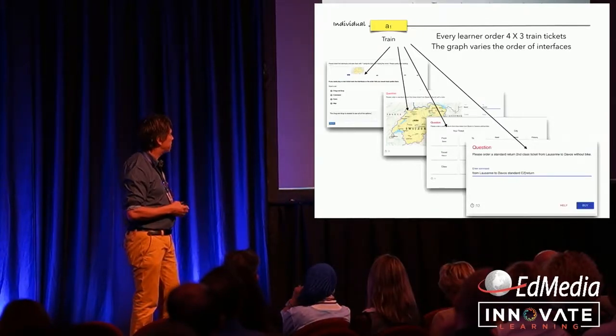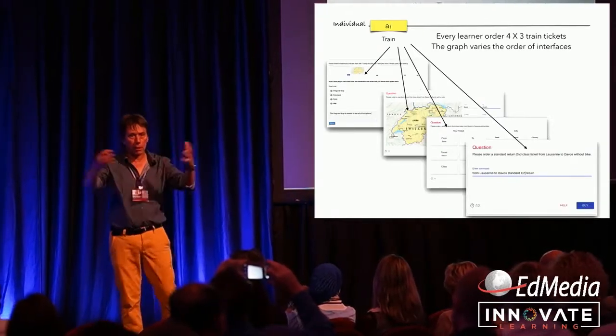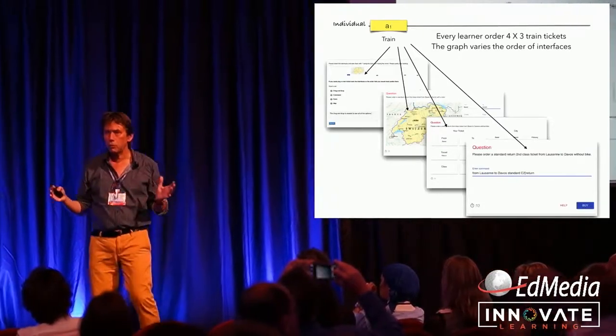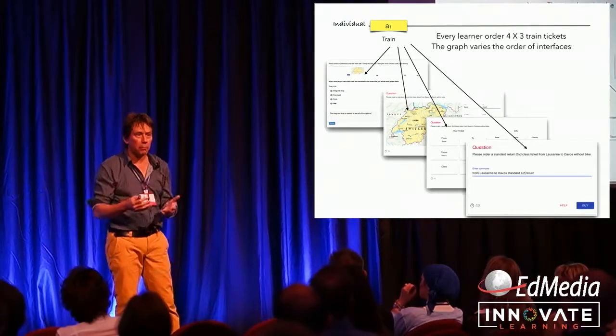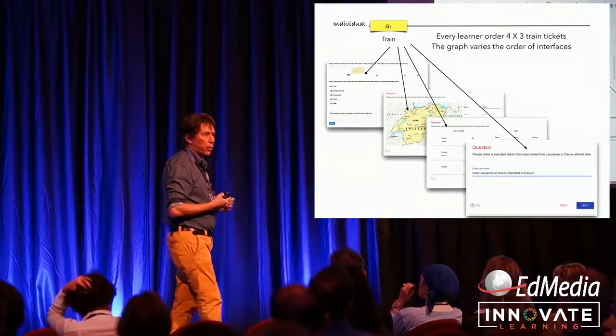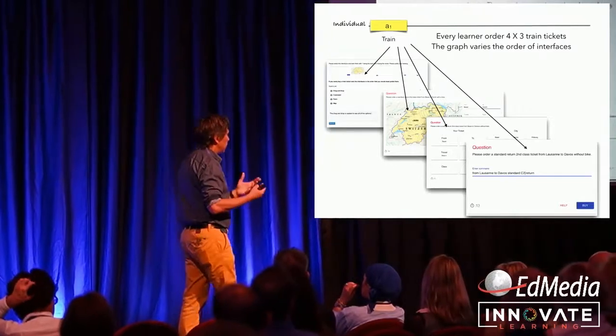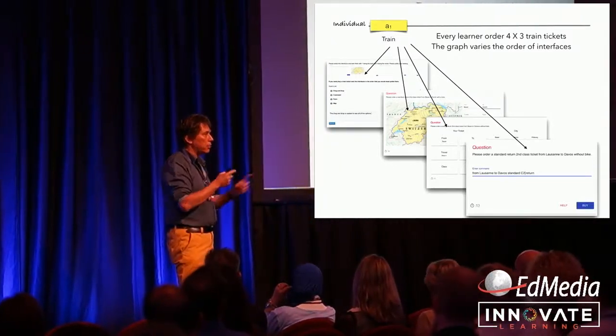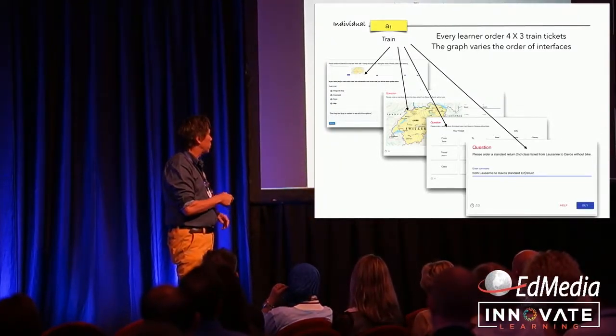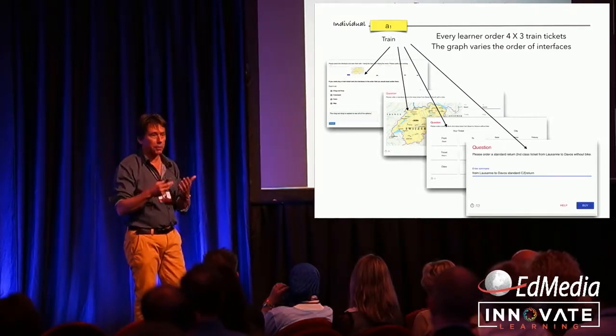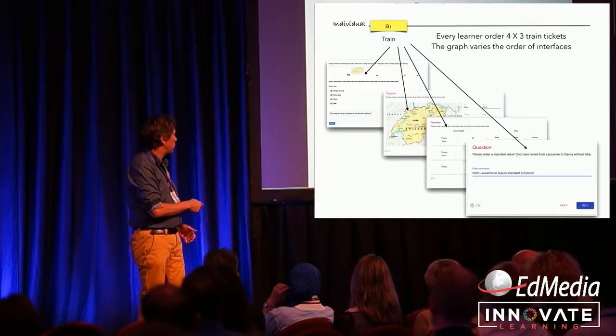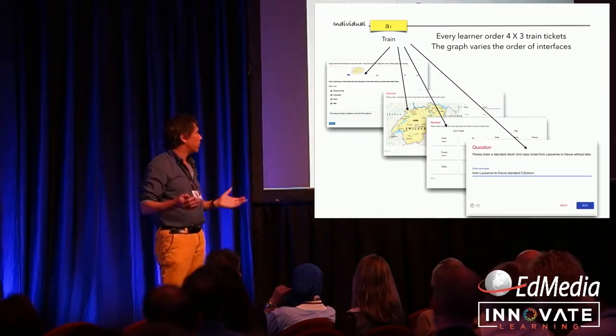So I have a class with, like here, about 100 people. Each of them opens his laptop and has to order 16 train tickets for the sake of the lessons in random order. Because I want to compare the performance in these four interfaces, some of them start with this one, some of them start with this one, and so on. This is randomized.